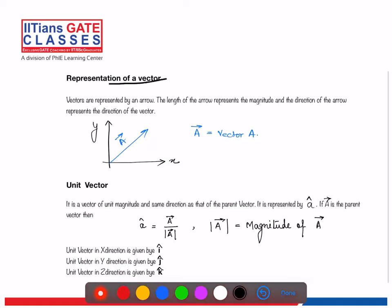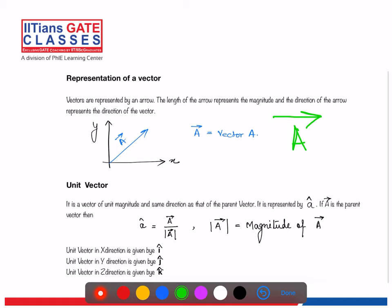Now, how is a vector represented? There are two ways. The first way is by an arrow. The length of the arrow represents the magnitude of the vector, and the direction of the arrow represents the direction of the vector. The direction is specified by giving an angle — for example, the vector makes an angle alpha with the x-axis. Vector A is written as A with an arrow drawn on top.